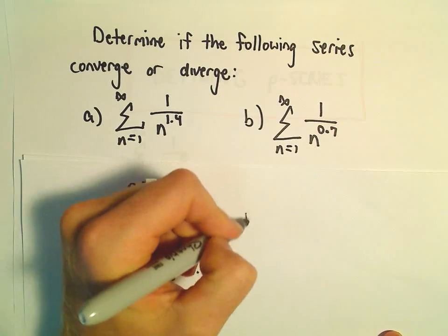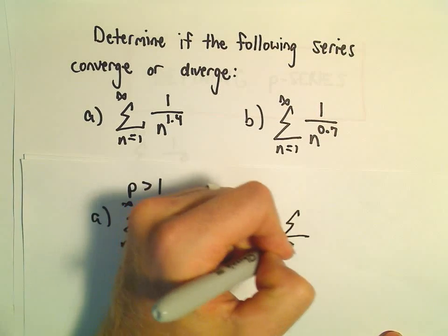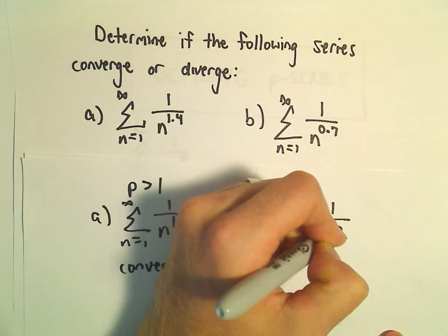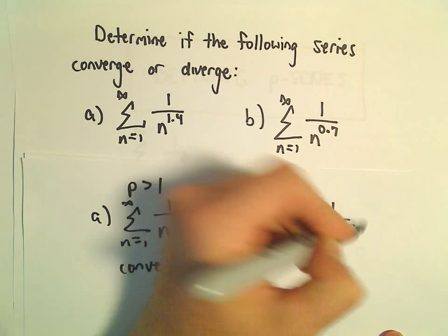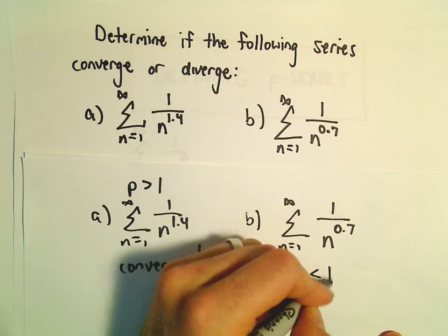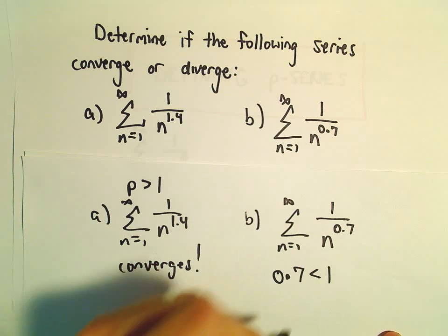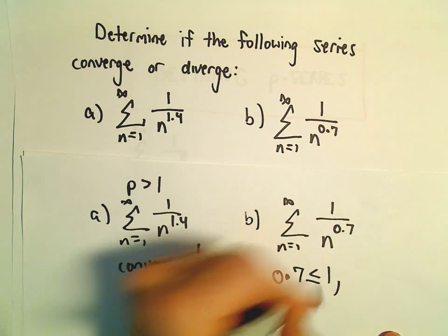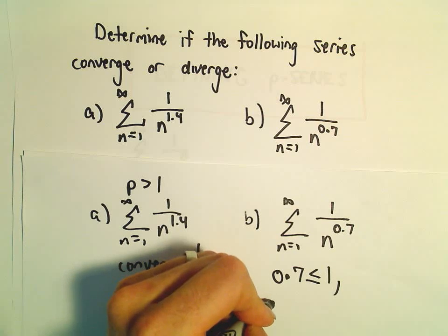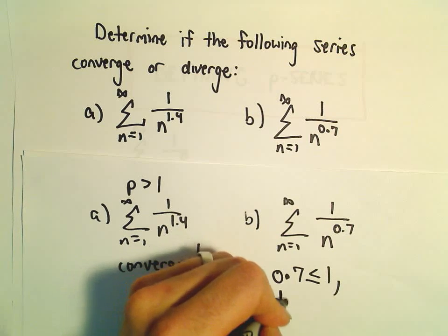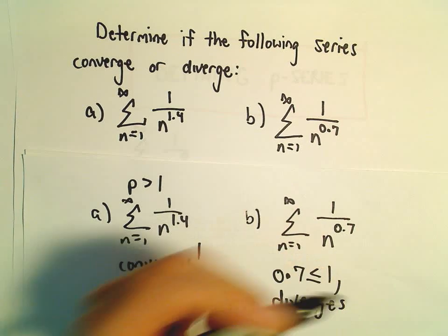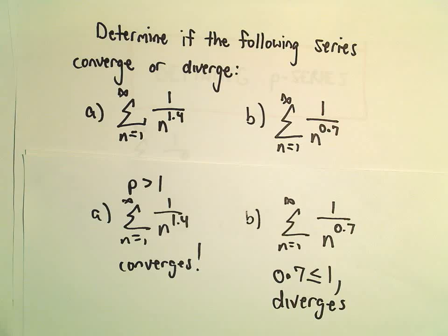For part b, in this case we've got n equals 1 to infinity of n raised to the 0.7. Well, 0.7 is certainly less than or equal to 1, so in this case our series diverges — it's a divergent p-series.